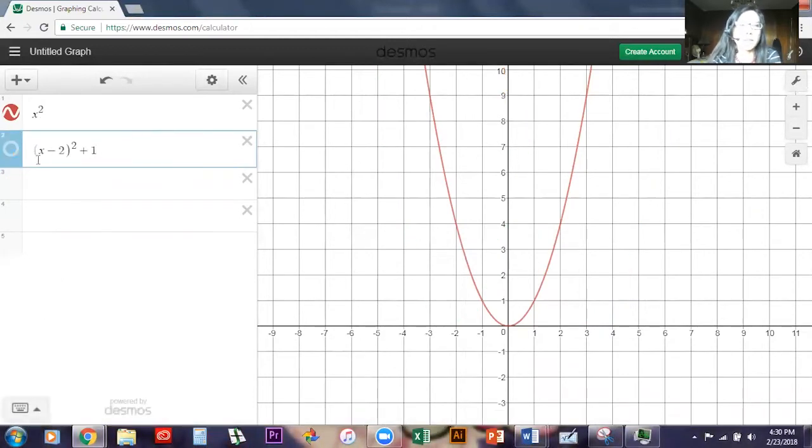So putting this all together, what would you expect a graph of (x minus 2) squared plus 1 to look like? Hopefully what you said is this negative two is going to shift us to the right. This plus one at the end is going to shift us up one unit.